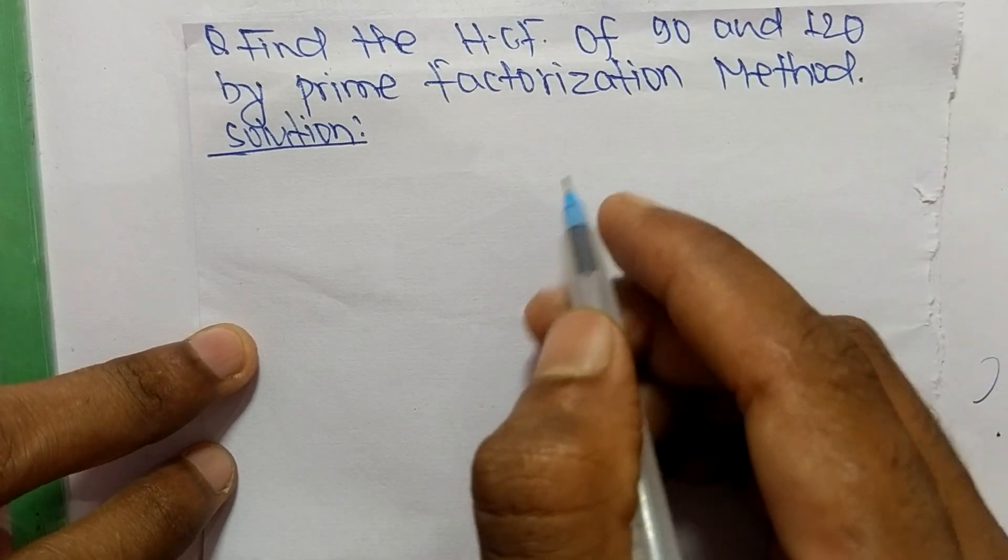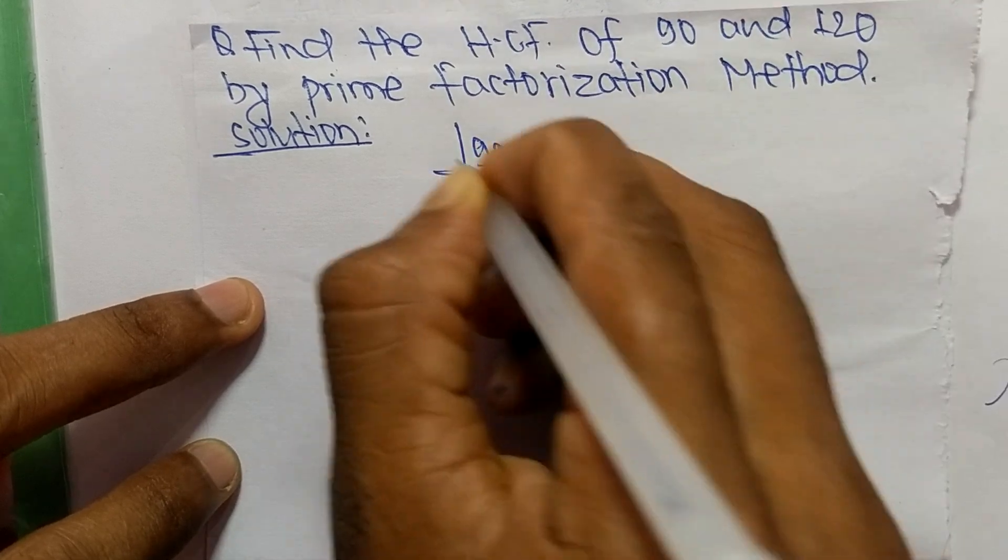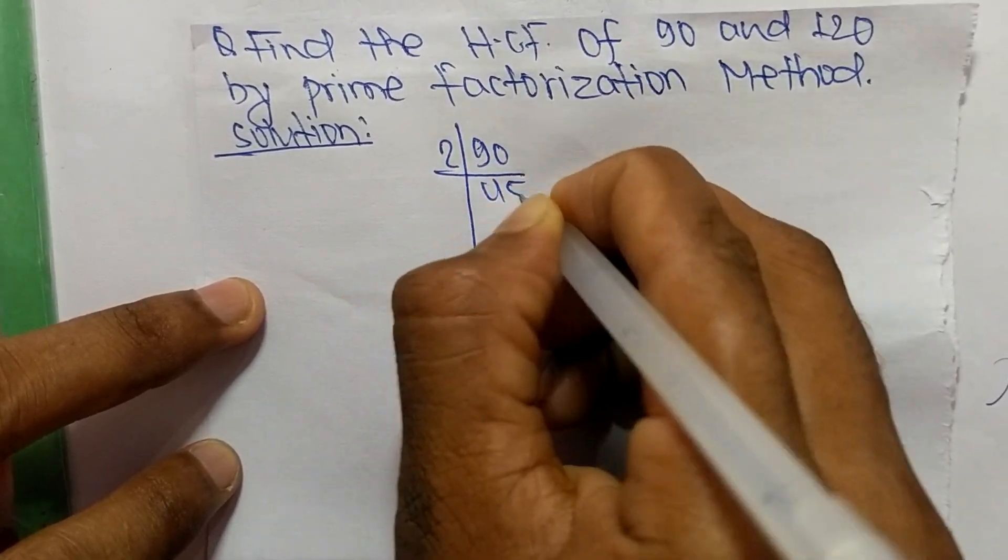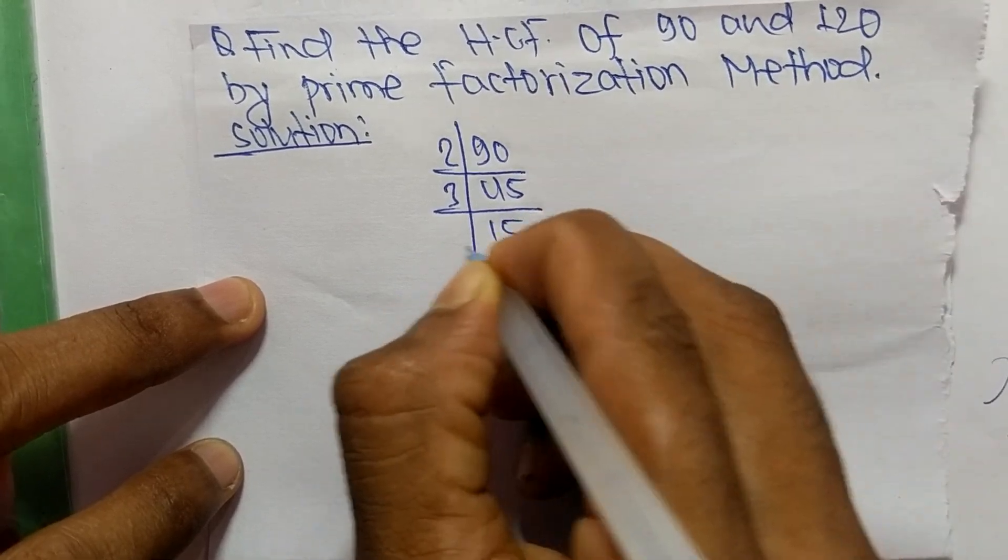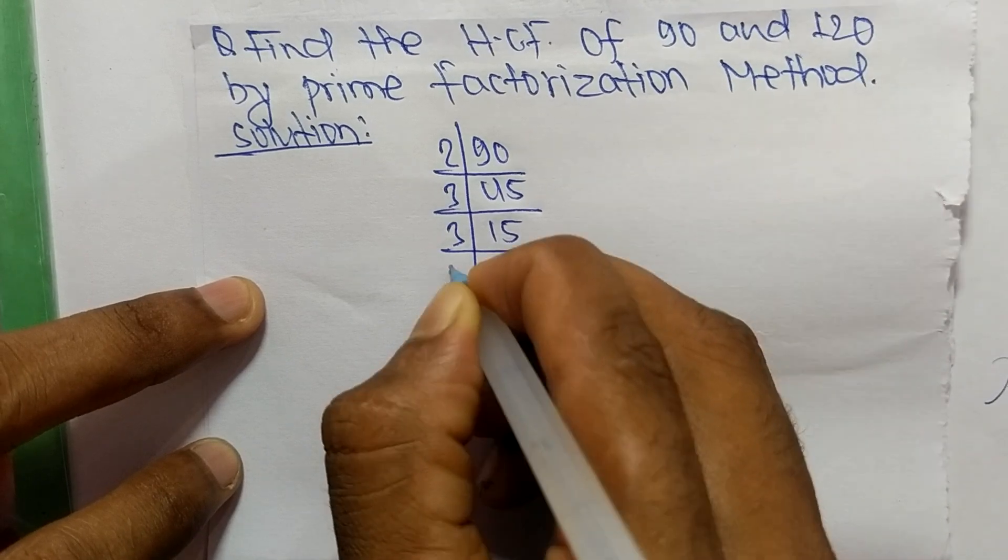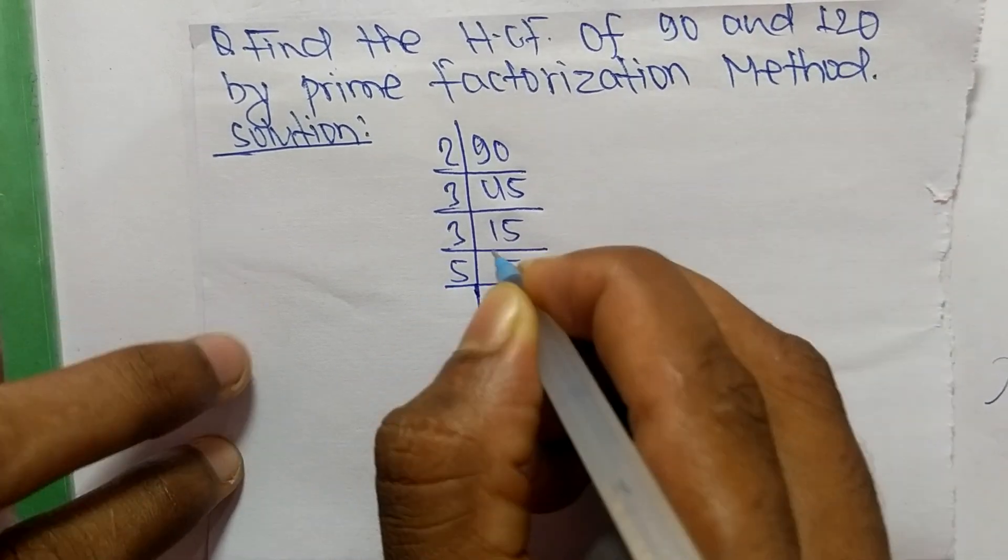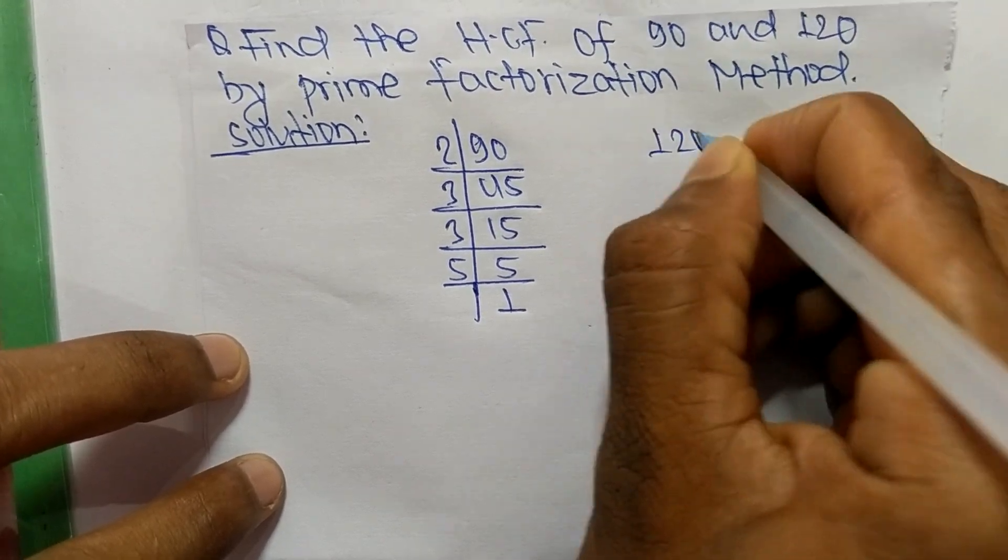First, we find out the prime factors of 90. So it is 2 times 45 means 90, 3 times 15 means 45, 3 times 5 means 15, and 5 times 1 means 5. These are the prime factors.